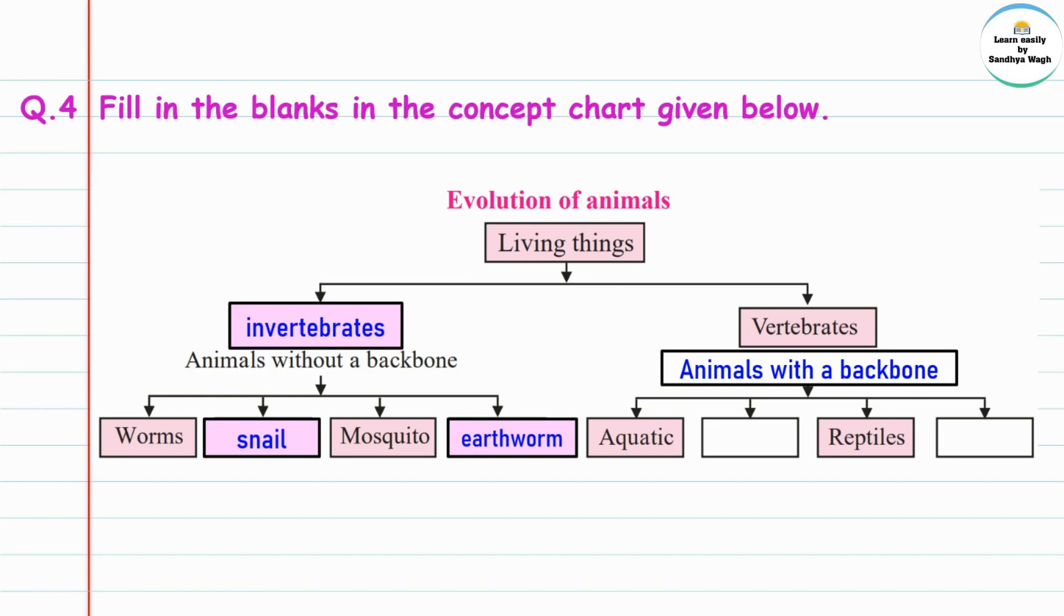The vertebrates include aquatic animals which live in water, then amphibians which live in water and on land, reptiles which are crawling animals, and mammals which are animals that give birth to live young.